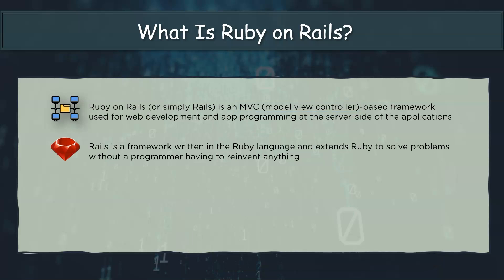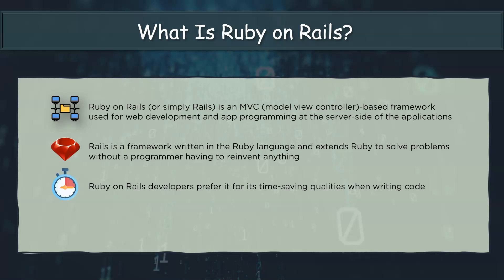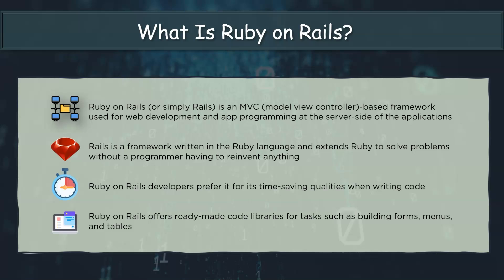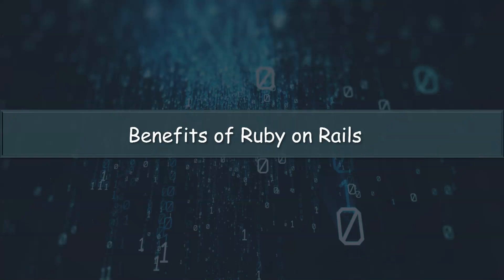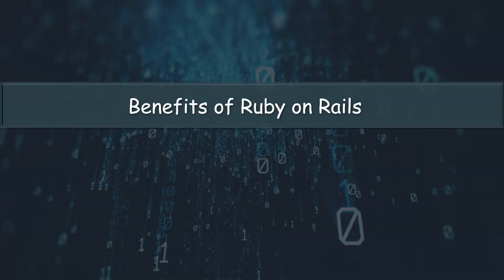Rails is a framework written completely in Ruby and it extends Ruby to solve problems without a programmer having to reinvent anything. Ruby on Rails developers preferred it when writing code because it provides ready-made code libraries for generating forms, menus, tables, etc. You must also be wondering why it is so popularly adopted, so here are some of the benefits of Ruby on Rails.